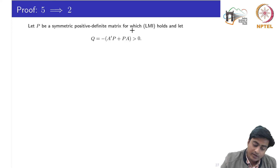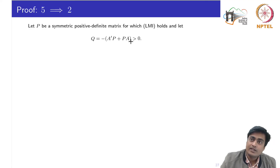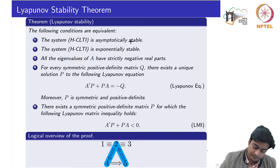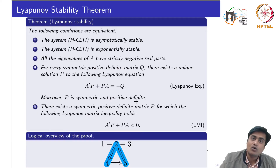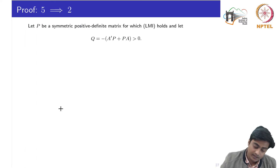Let P be a symmetric positive definite matrix for which the linear matrix inequality holds, and let us define Q as negative A-transpose P plus P A, which is greater than 0. This is just a rewriting of that equation in other terms, because P and Q matrices are already given to us and we already know that 4 implies 5.